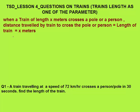So the distance travelled by the train to cross the pole is equal to the length of the train.